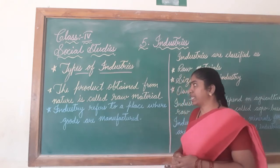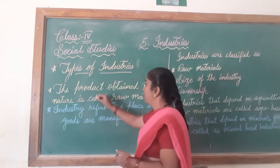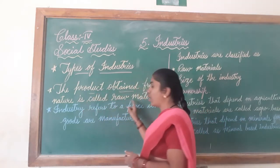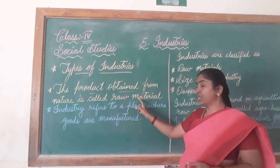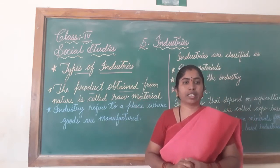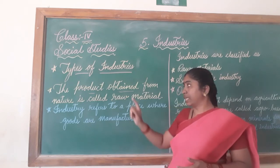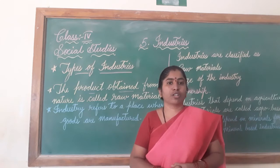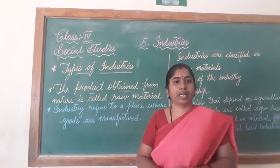First, let us see what is raw material. The product obtained from nature is called raw material. This is the first thing you should understand - the product obtained from nature is called the raw material.